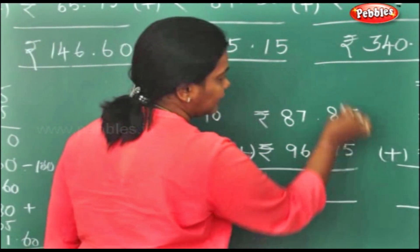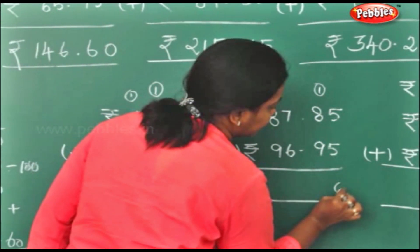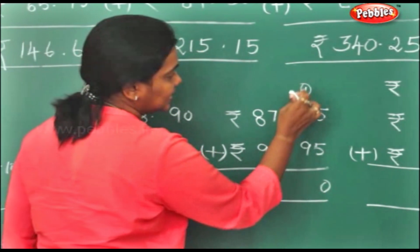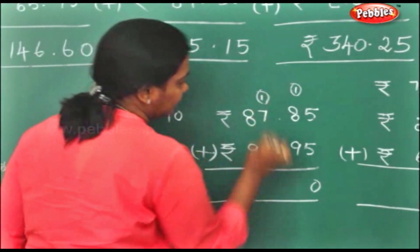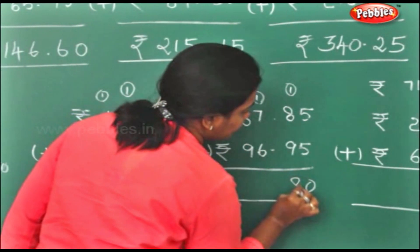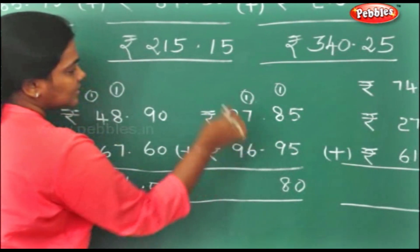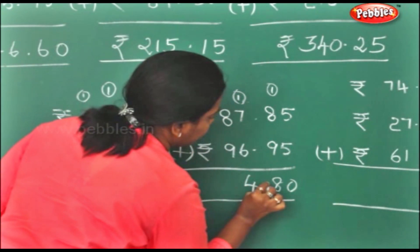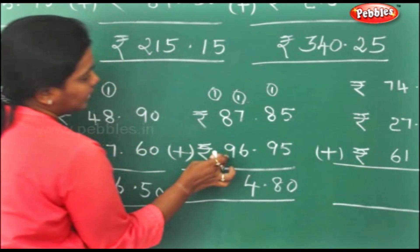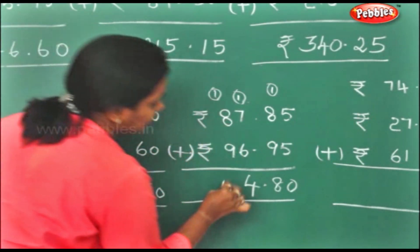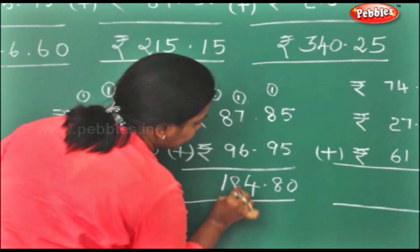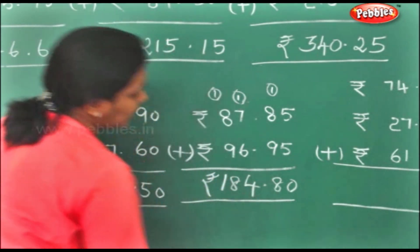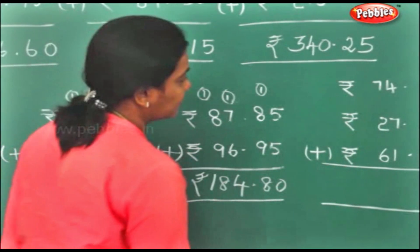5 plus 5 is 10. 9 plus 1 is 10. 10 plus 8 is 18. 8 plus 6 is 14. 9 plus 9 is 18. So rupees 184 and 80 paise.